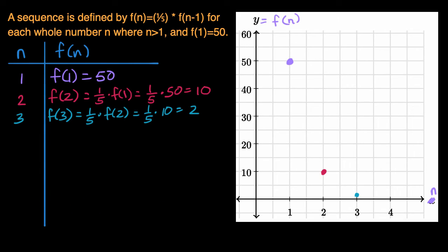And then last but not least, I'll do it in orange, when n is equal to four, f(4) is equal to one-fifth times f(3), the previous term, which is equal to one-fifth times 2, which is equal to two-fifths. So that's less than one, so it's going to be just right above zero like that.